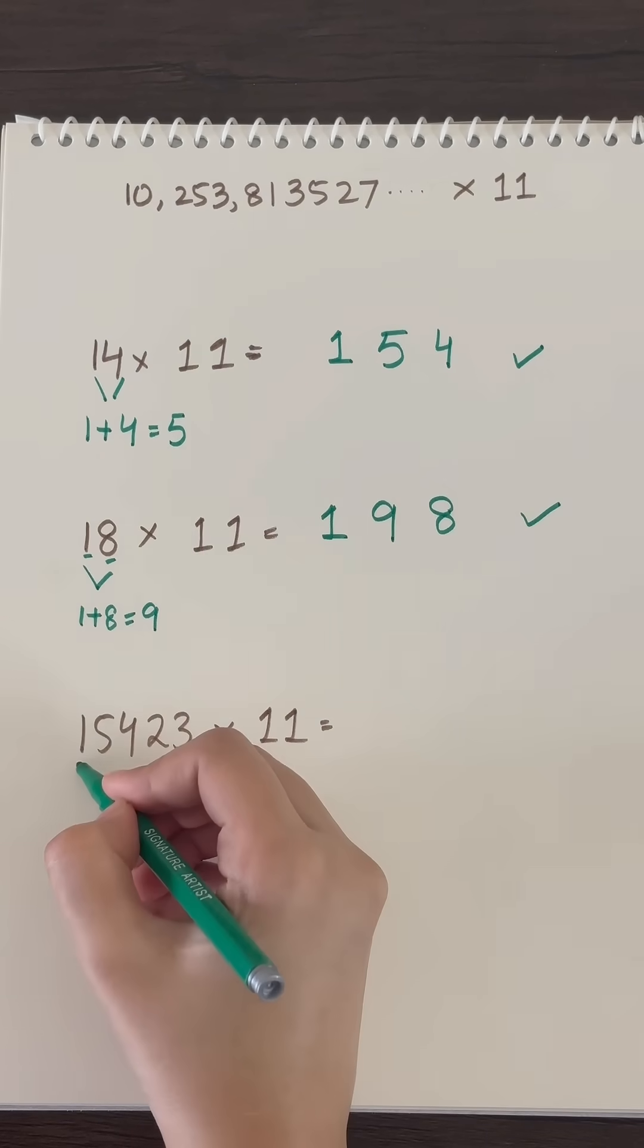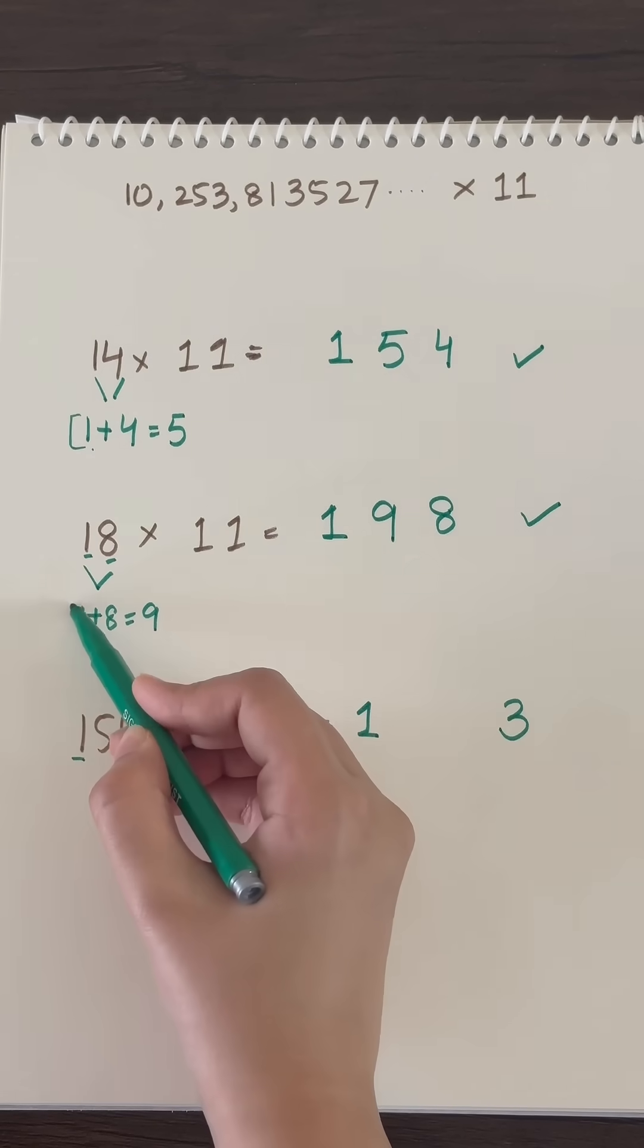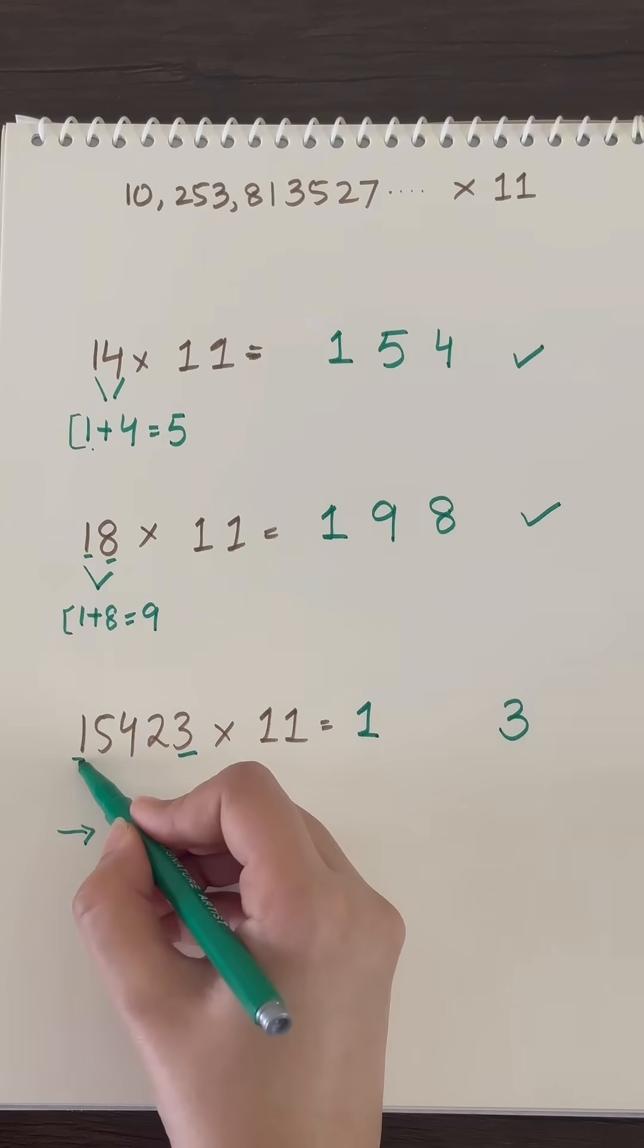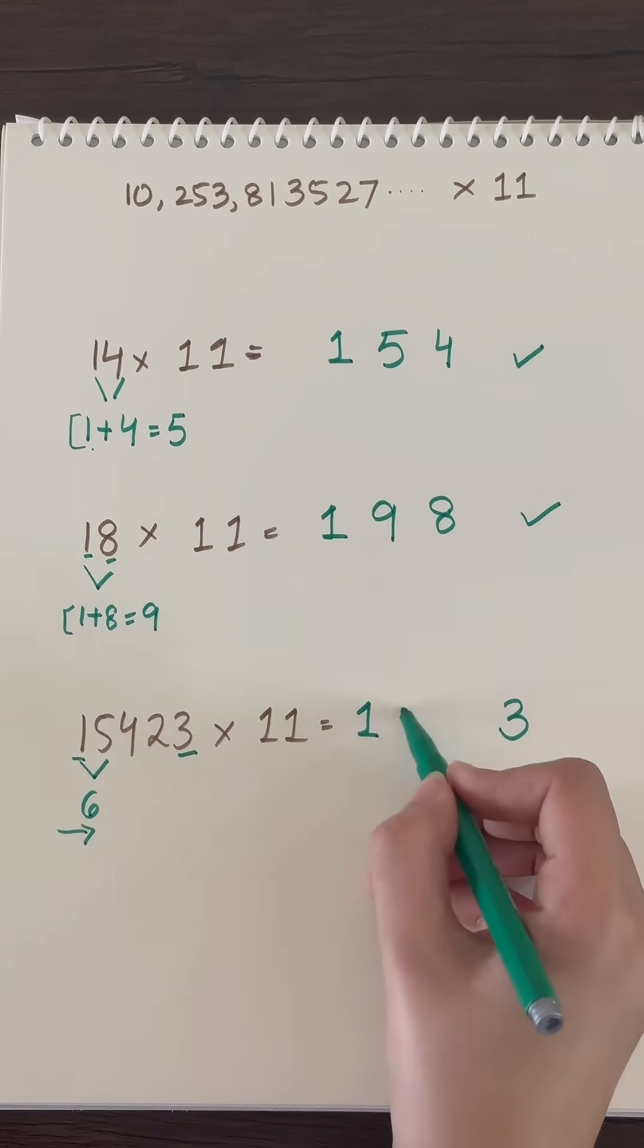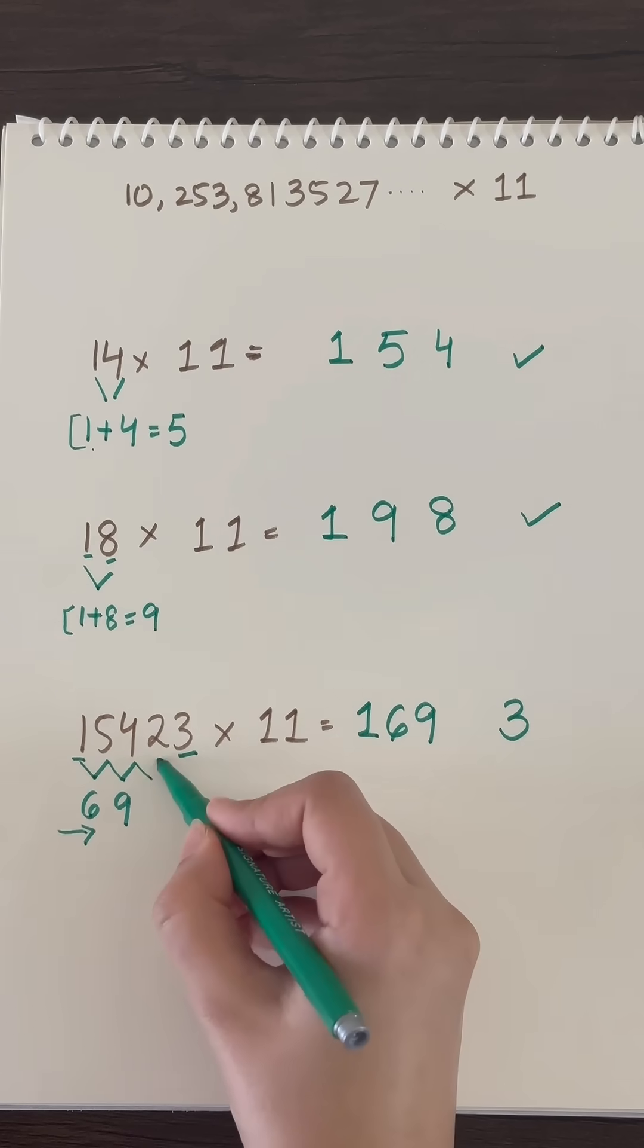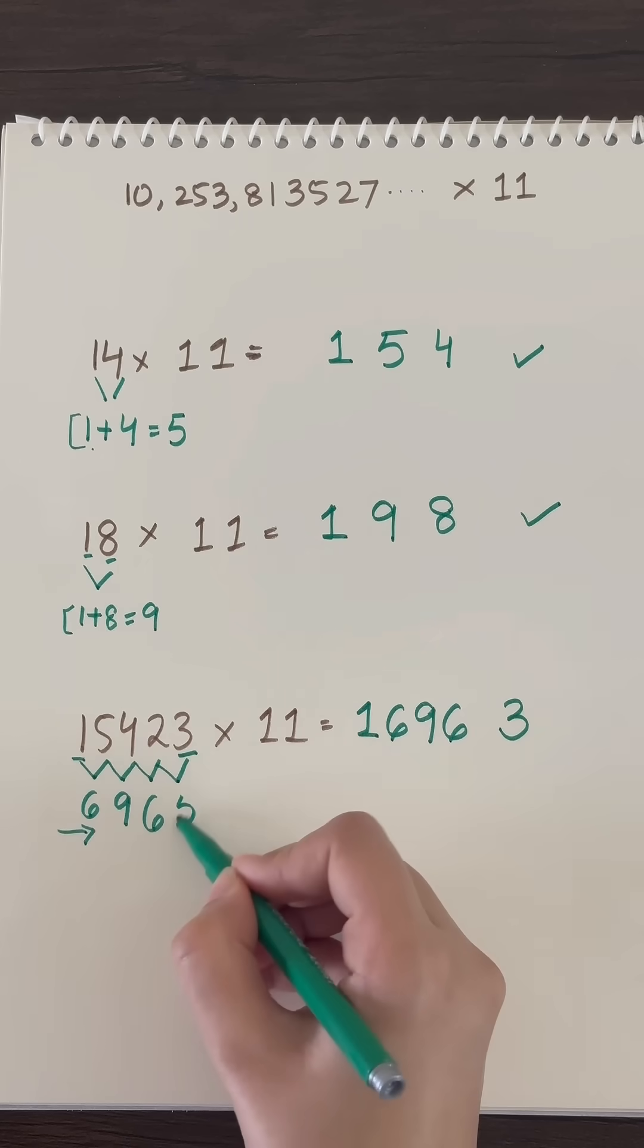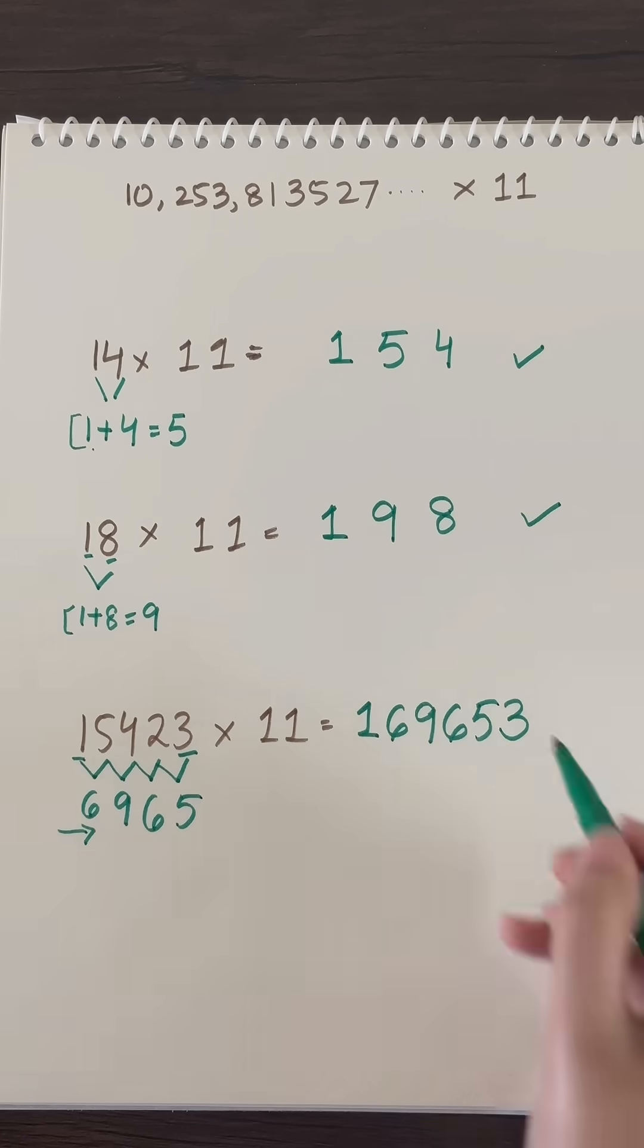Let's look at a bit difficult example. Take the first digit, take the last digit. Now as you added both the digits in the upper example, we will add 1 plus 5 that gives us 6, so write it next to the first digit. Now keep adding the digits as 5 plus 4 are 9, 4 and 2 are 6, and 2 and 3 are 5, that gives us 169,653. And that's our answer of such long multiplication.